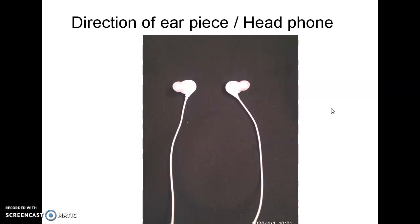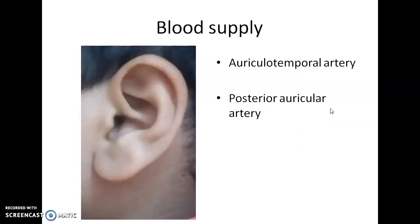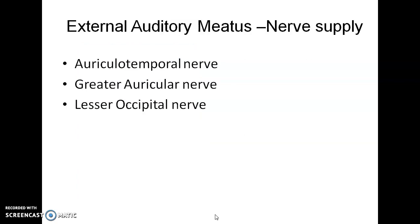Coming to blood supply: the auriculotemporal artery supplies the auricle and temporal area, and the posterior auricular artery supplies behind the auricle. These provide the blood supply to the external auditory canal.